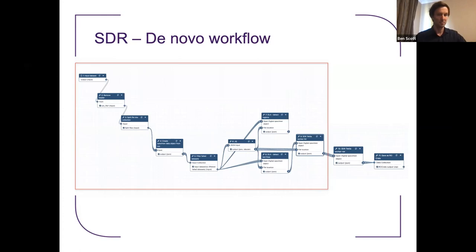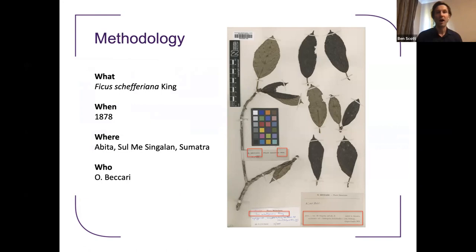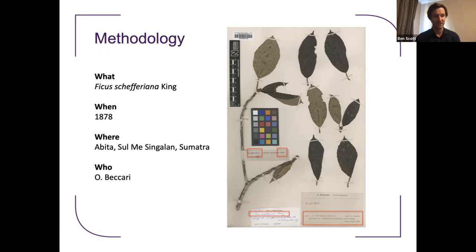The SDR supports three object types: herbarium sheets, pinned insects, and microscope slides. I selected 50 of each from the NHM data portal and transcribed the key textual elements: the taxonomic name, when, where, and who collected it. On the labels, this information is a mixture of handwritten and typewritten — about a 20 to 80 split. I know 150 isn't a huge evaluation dataset, but hopefully it's enough to give an indication, and I'd like to rerun this with more data in the future.